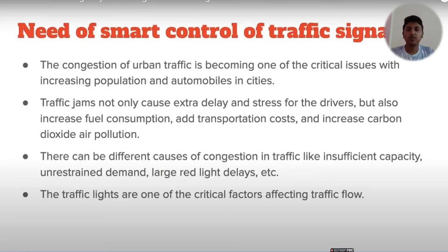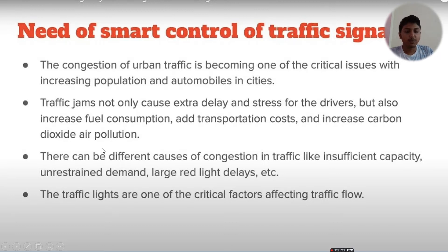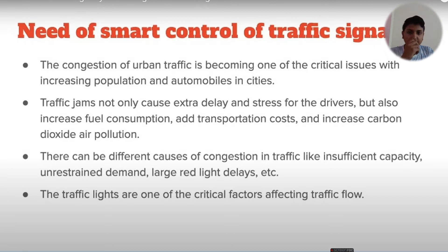Now, the need for smart control of traffic signals. The congestion of urban traffic is becoming one of the predominant issues with increasing population and automobiles in cities. The increasing population is the biggest problem in India and automobiles are also increasing — a situation that neither we nor the traffic police are able to handle, especially at heavily congested squares.